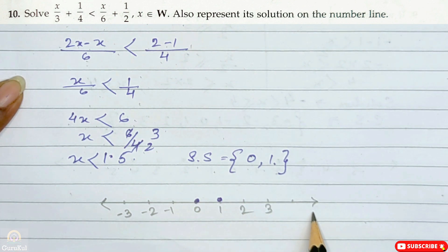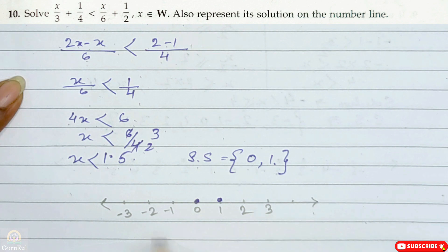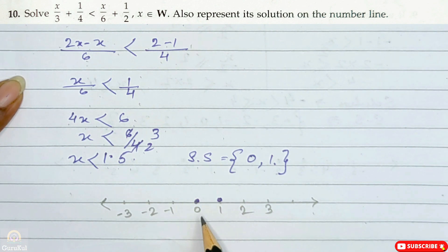Now draw the number line with arrows on both ends. Write the digits on the number line and highlight zero and one.